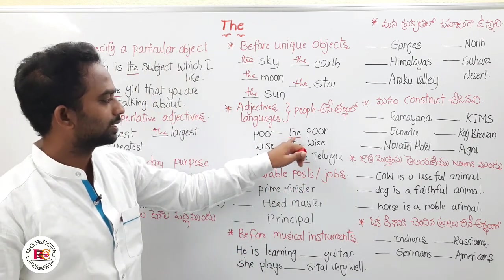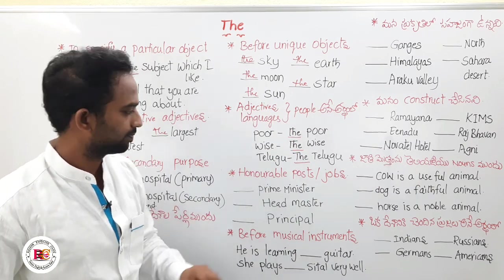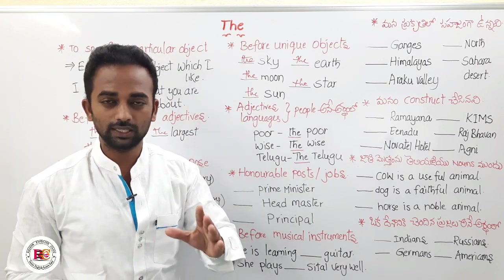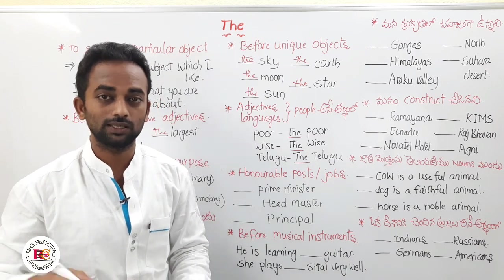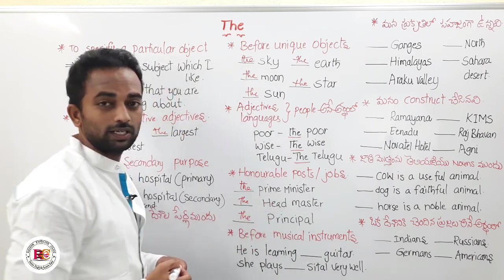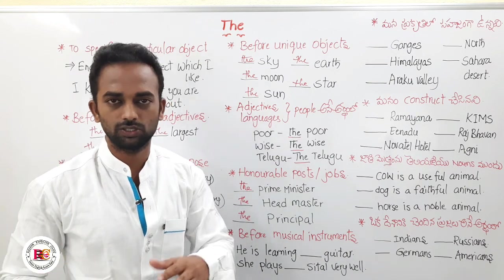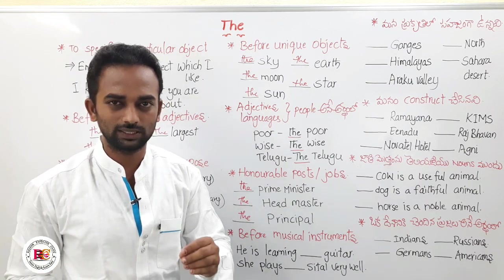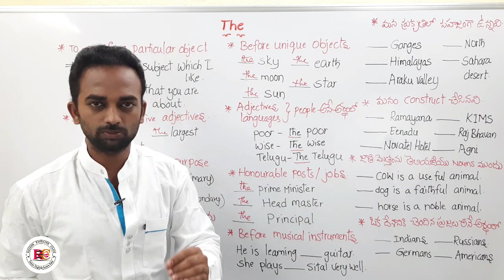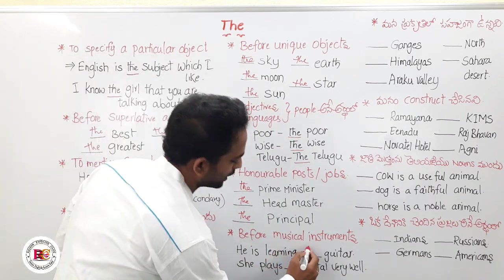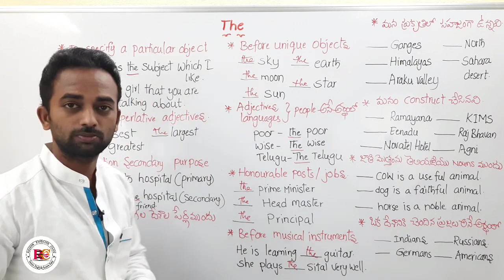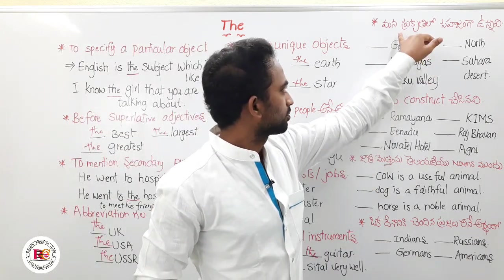Next: honorable posts and jobs. When you refer to honorable posts, we use 'the'. For example: the Prime Minister, the Chief Minister, the President, the Headmaster. These are noble posts, so we use 'the' before them. Next, before musical instruments, we use 'the'. For example: 'He is learning the guitar' and 'She plays the sitar very well.' So before musical instruments, we use 'the'.